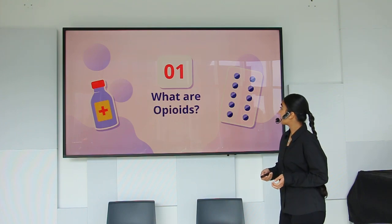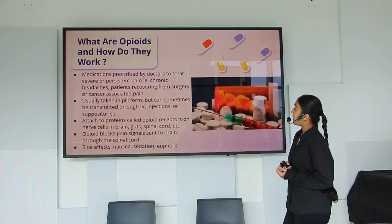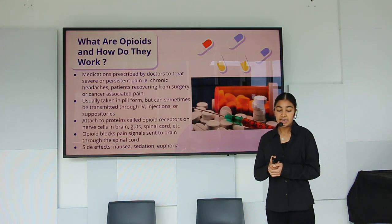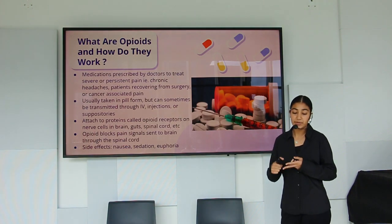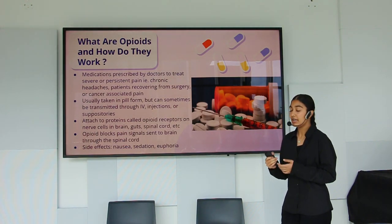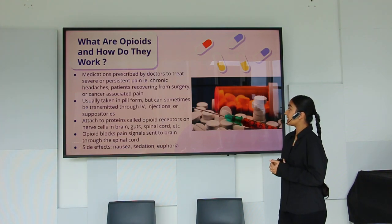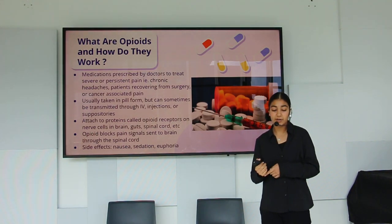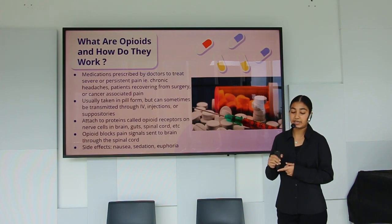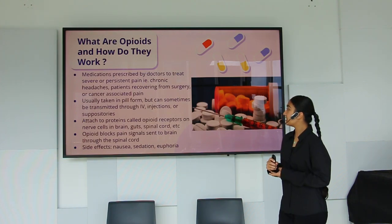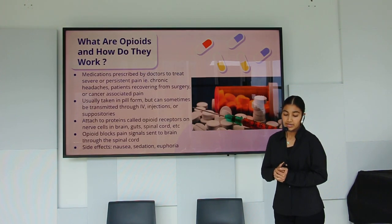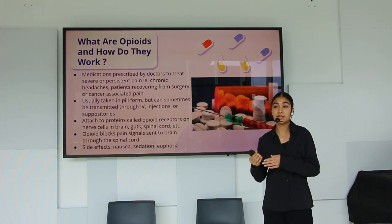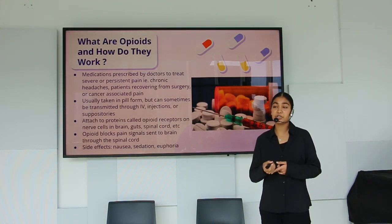So what are opioids and how do they work? Opioids are medications prescribed by doctors to treat severe or persistent pain — anything from chronic headaches to patients recovering from surgery or cancer-associated pain. They can be taken in pill form or transmitted through injections or suppositories. They attach to proteins called opioid receptors on nerve cells in the brain, gut, and spinal cord. When ingested, they block pain signals sent to the brain, and side effects can include nausea and euphoria.